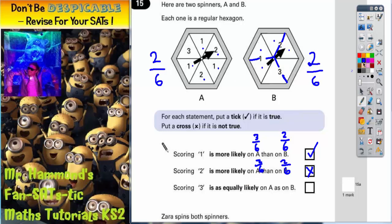The final statement says scoring a three is equally as likely on A as on B. Well, if we're looking at just the threes, on statement A, there is one three. So that's one out of six. On statement B,